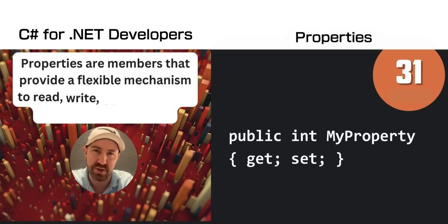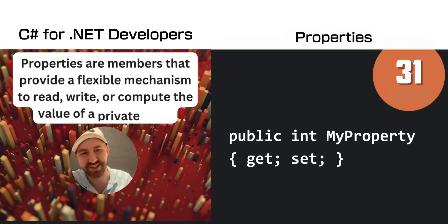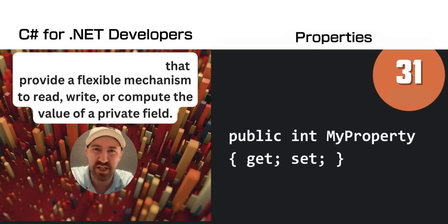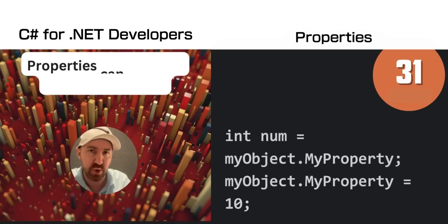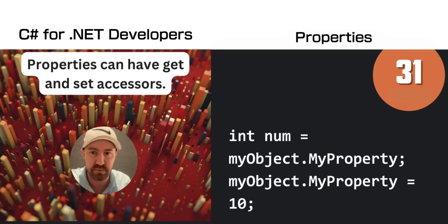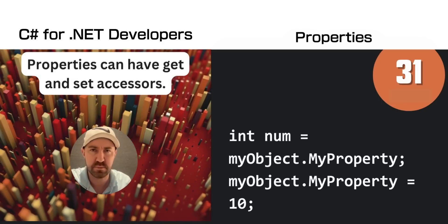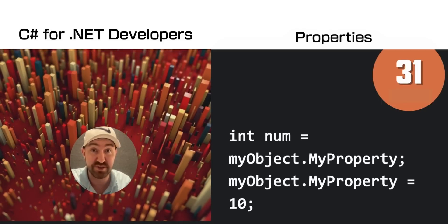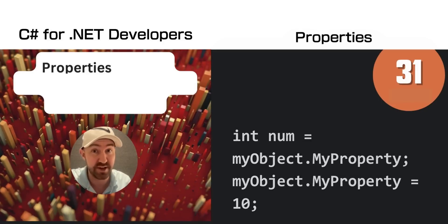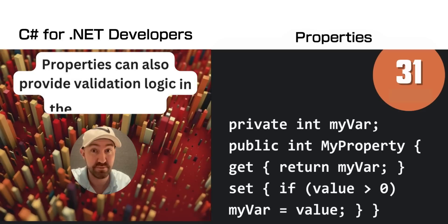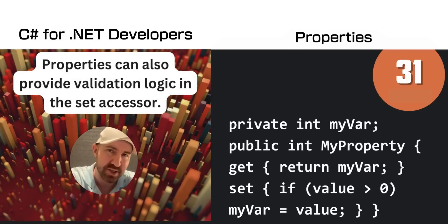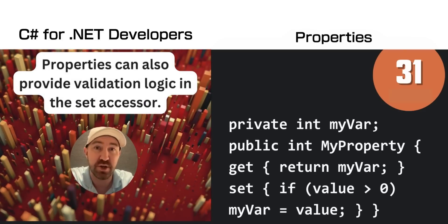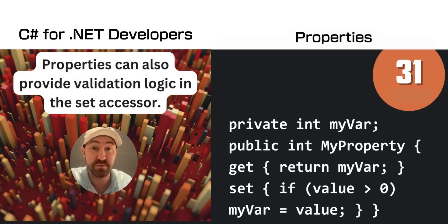Properties, or what some people call getters and setters, provide a very flexible mechanism for reading, writing, or computing values. Here's an example of getting a value and then setting the value to 10. Because logic can be added during the setter, you can do things like validation at this point.